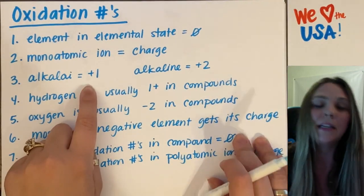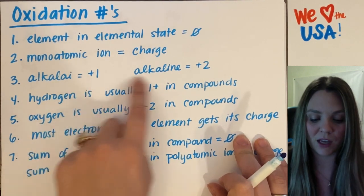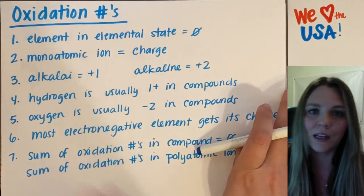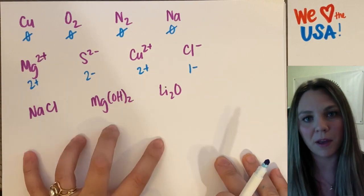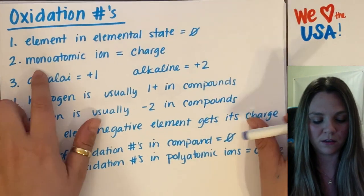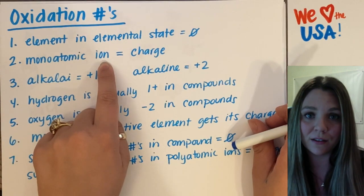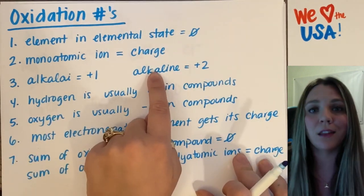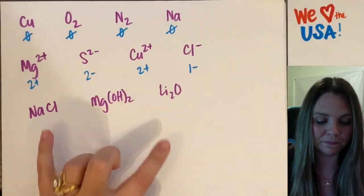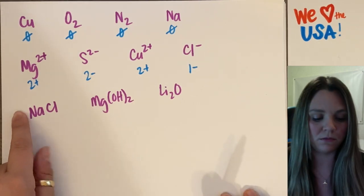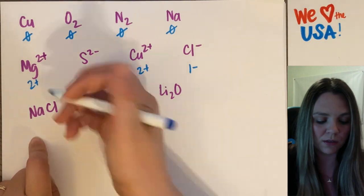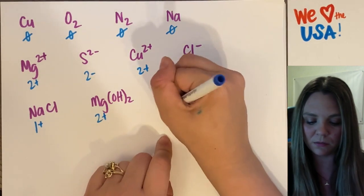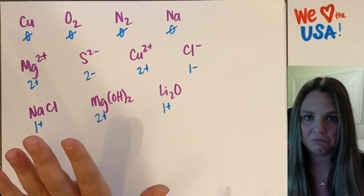Rule number three: alkali metals will always get a plus one; alkaline earth metals will always get a plus two. This makes sense because that's the charge they would carry in any compound. So sodium in a compound would be one plus, magnesium two plus, lithium one plus — they get exactly what they would make as a charge.